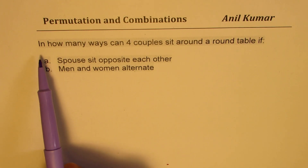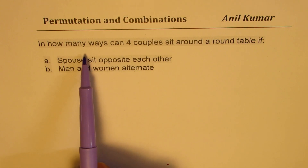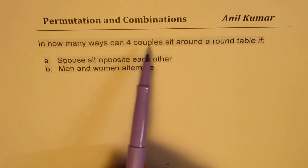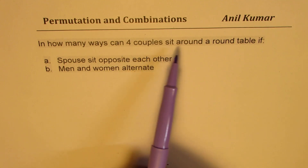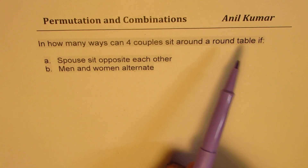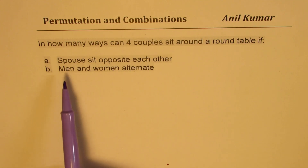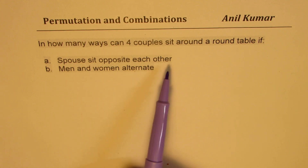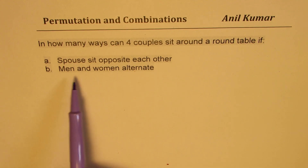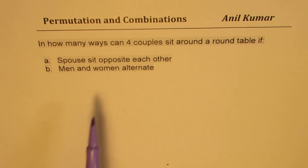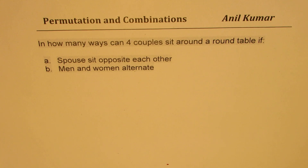The question here is: in how many ways can four couples sit around a round table if spouses sit opposite each other, and men and women alternate? These are the two parts to it. You can always pause the video and answer this question. Let's take these cases one by one.